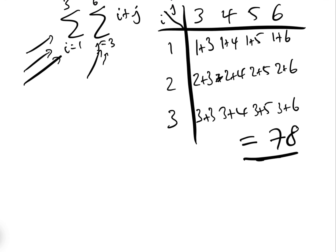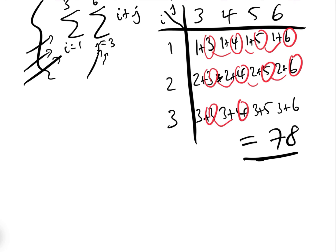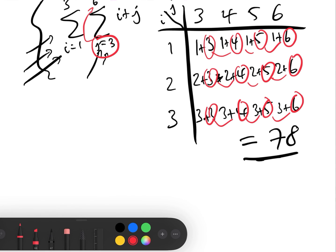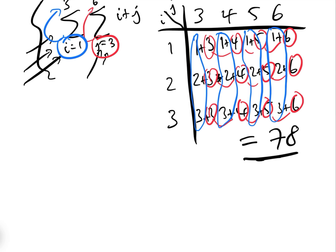We can be a little more general, because for a more complex double summation we can't always use a table. Looking at the pattern in red: three plus four plus five plus six appears in each row — that's the sum of j from three to six, repeated three times. And in blue, the values one, two, and three appear in each column — that's the sum of i from one to three, repeated four times.